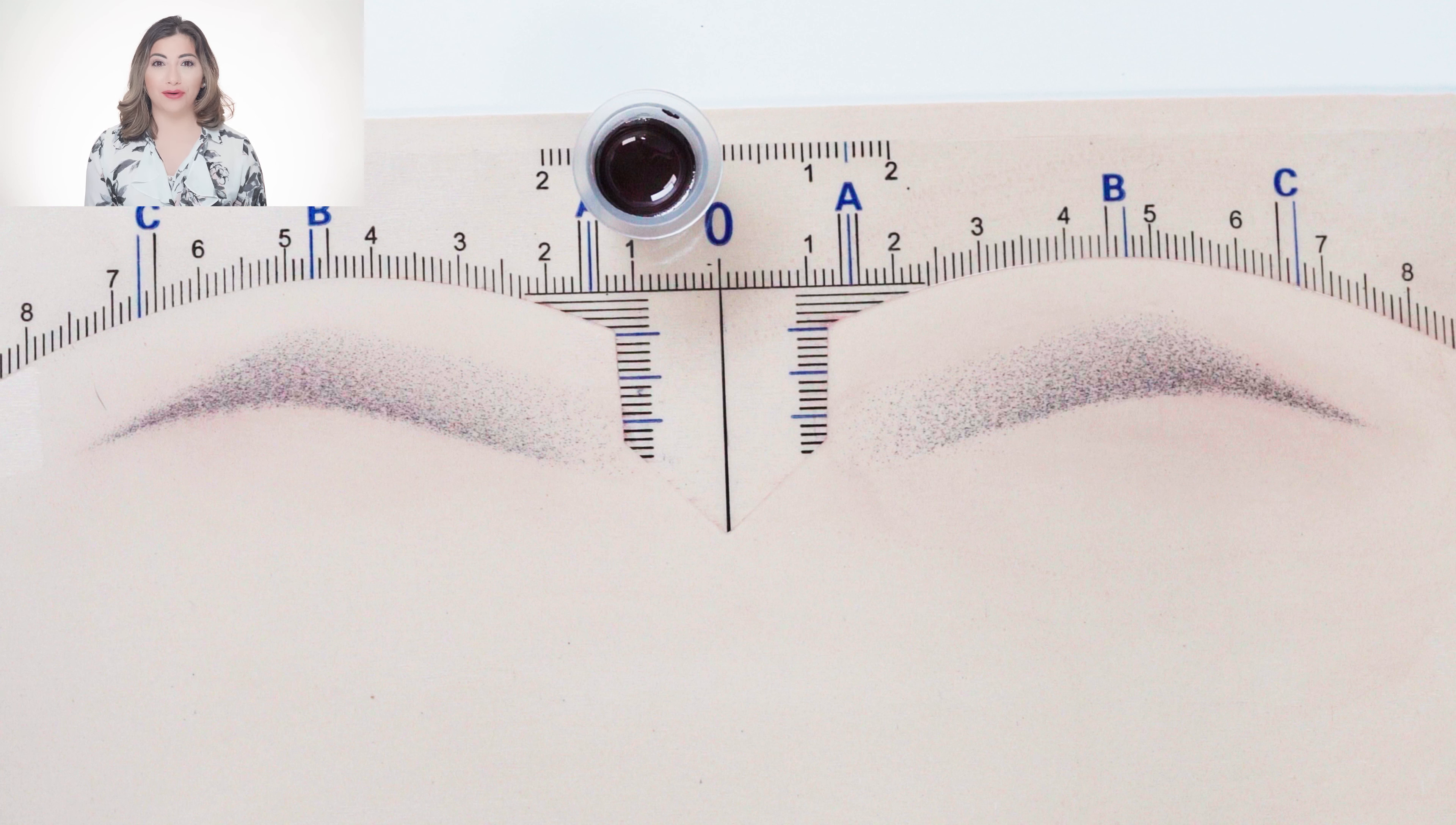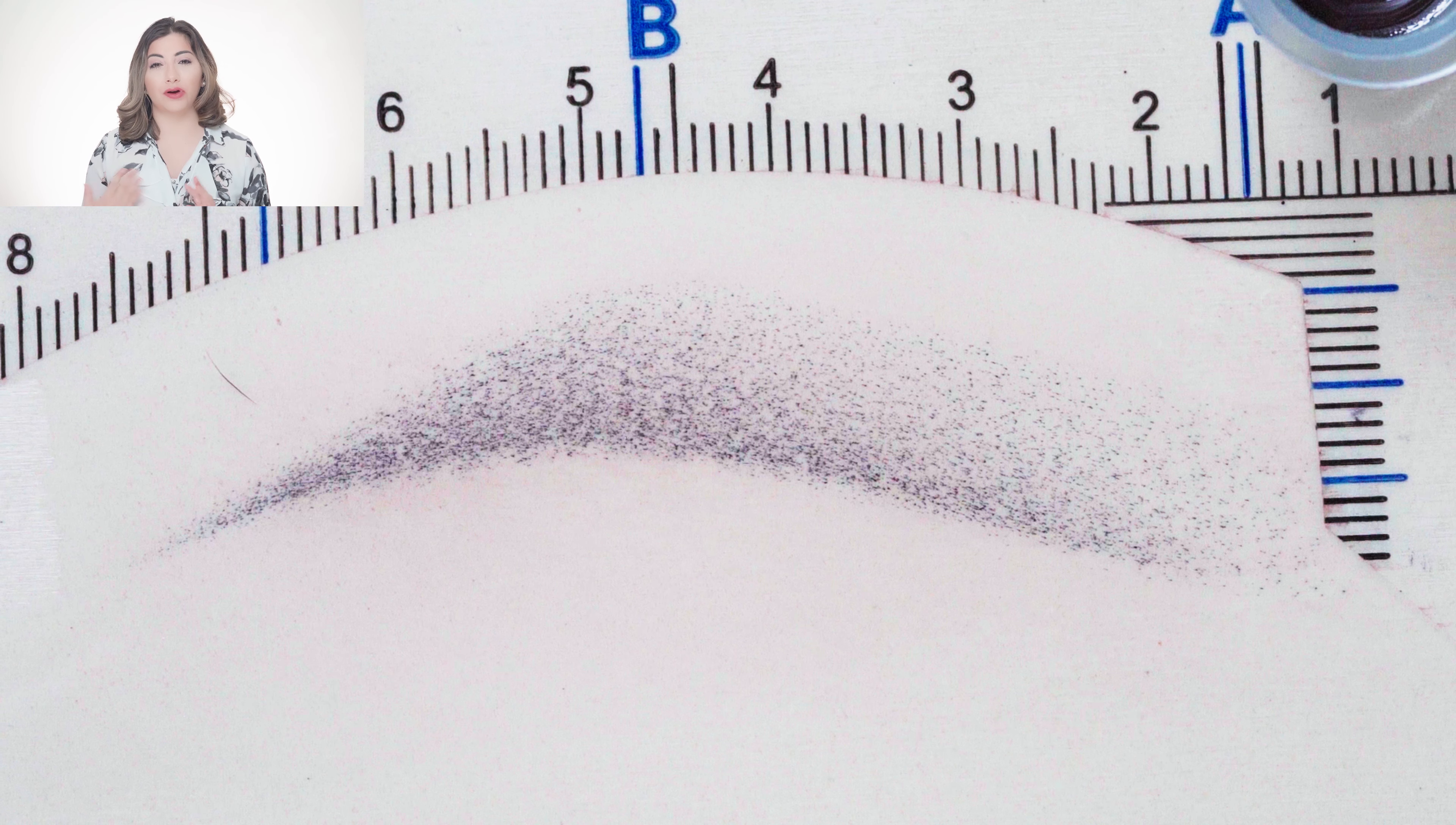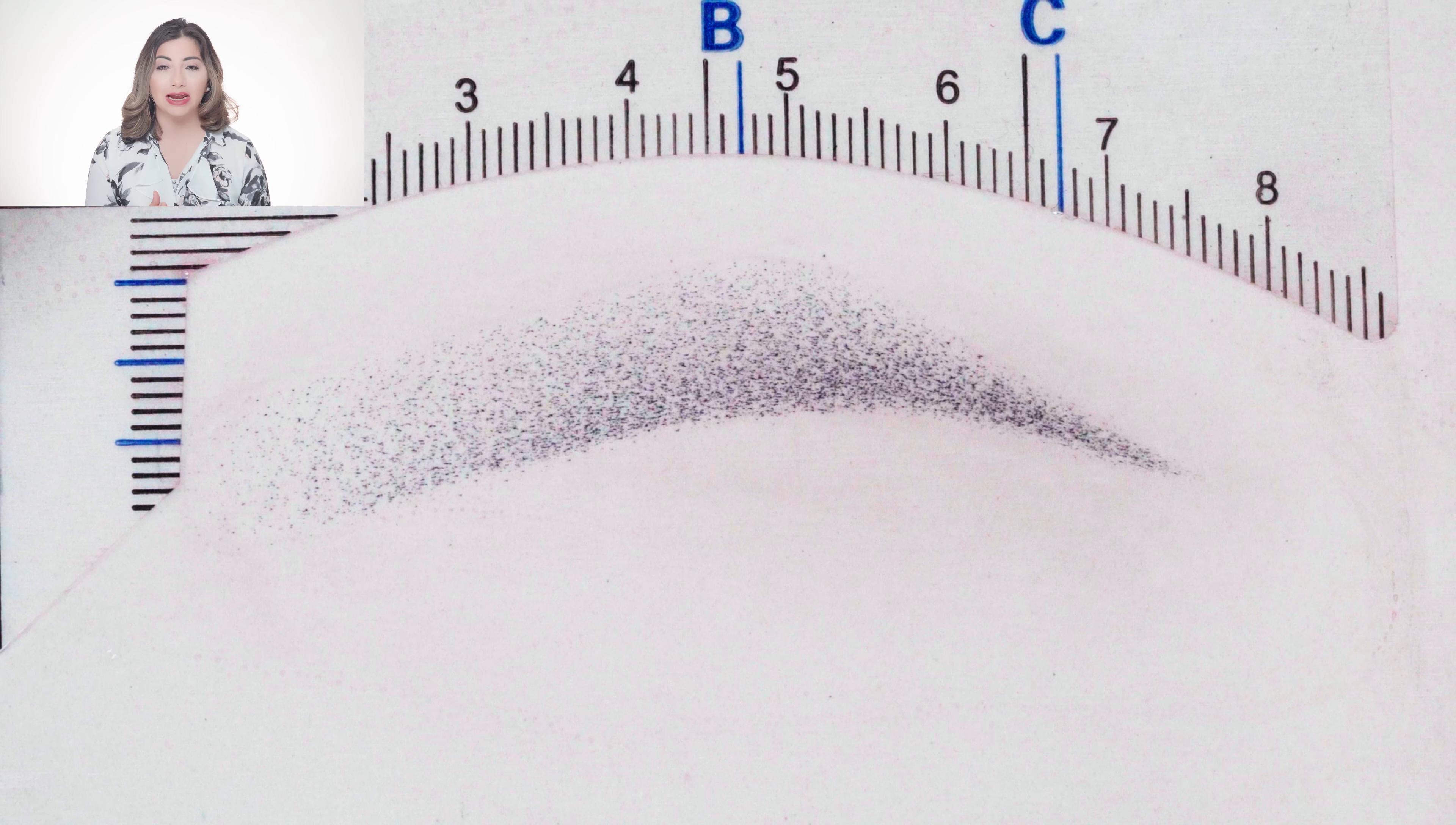My style of permanent makeup ombre eyebrows, or I also call them soft powder brows, is really soft, not too dark of a look, and therefore they do look really soft on latex work. Now if you want more color or more of a bold brow, you can just continue by blending and adding more and more layers. You can add up to 10 layers if you like.